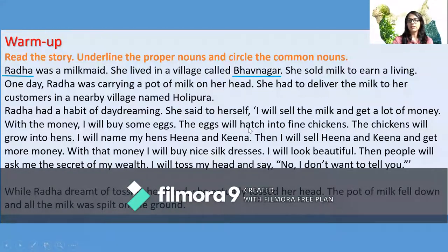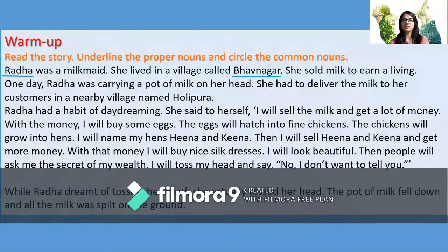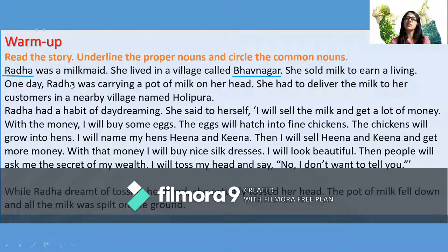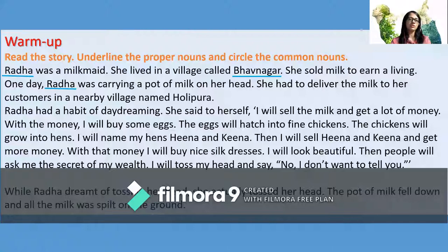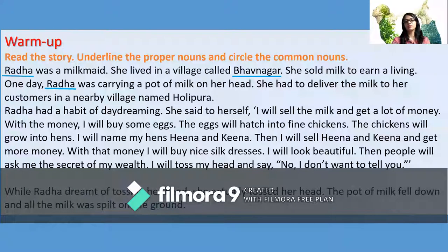'She sold milk to earn a living.' In this sentence there are no proper nouns. In the third sentence, Radha appears again — and even in the middle of the sentence, R is capital, so Radha is a proper noun. 'She had to deliver the milk to her customers in a nearby village called Holipura.' Holipura is the name of the village, so it is a proper noun.